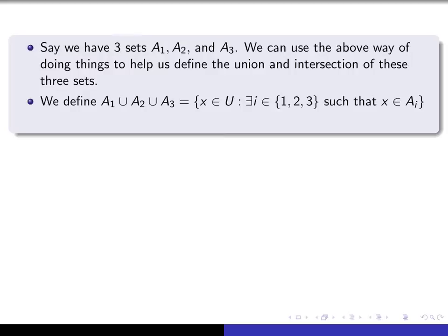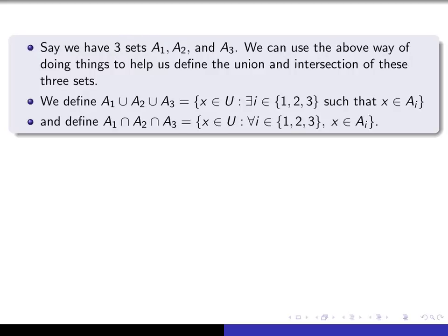We define the union of the three sets A1, A2, A3 to be the set of all X such that there exists an index I, either 1, 2, or 3, such that X is an element of A sub I. And we define the intersection of all three sets to be the set of all X such that for every index I from 1 to 3, X is an element of A sub I. That's the working definition of the union and intersection of three sets, and the only difference in expressing them is the type of quantifier we use for the index.